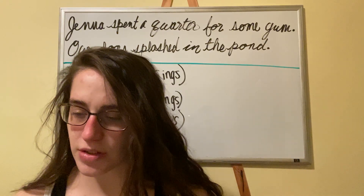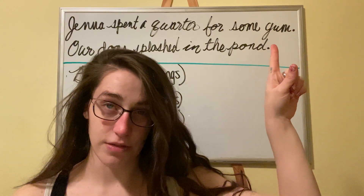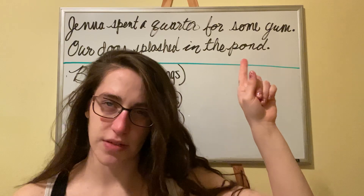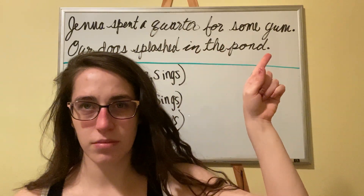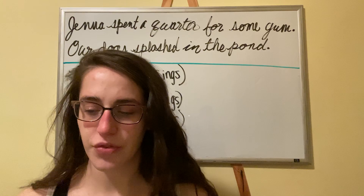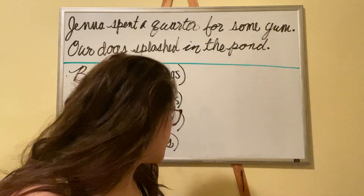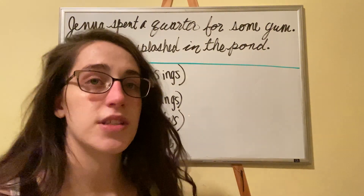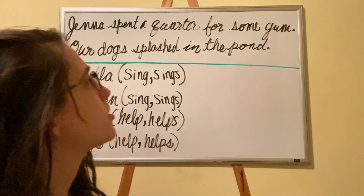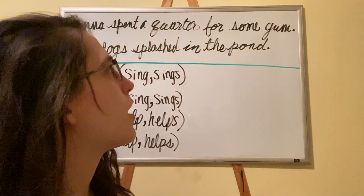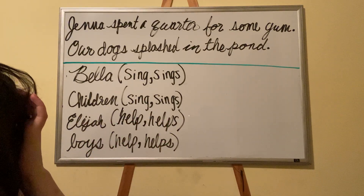So very first, I want us to look at this first sentence I have above my head. I wrote it in cursive. Some of you might be on small devices, so I'm going to read it for you. It says: Jenna spent a quarter for some gum. So the first thing we need to do is separate our subject from our predicate — the two parts of the sentence. Where are you going to draw the line to separate the subject from the predicate?